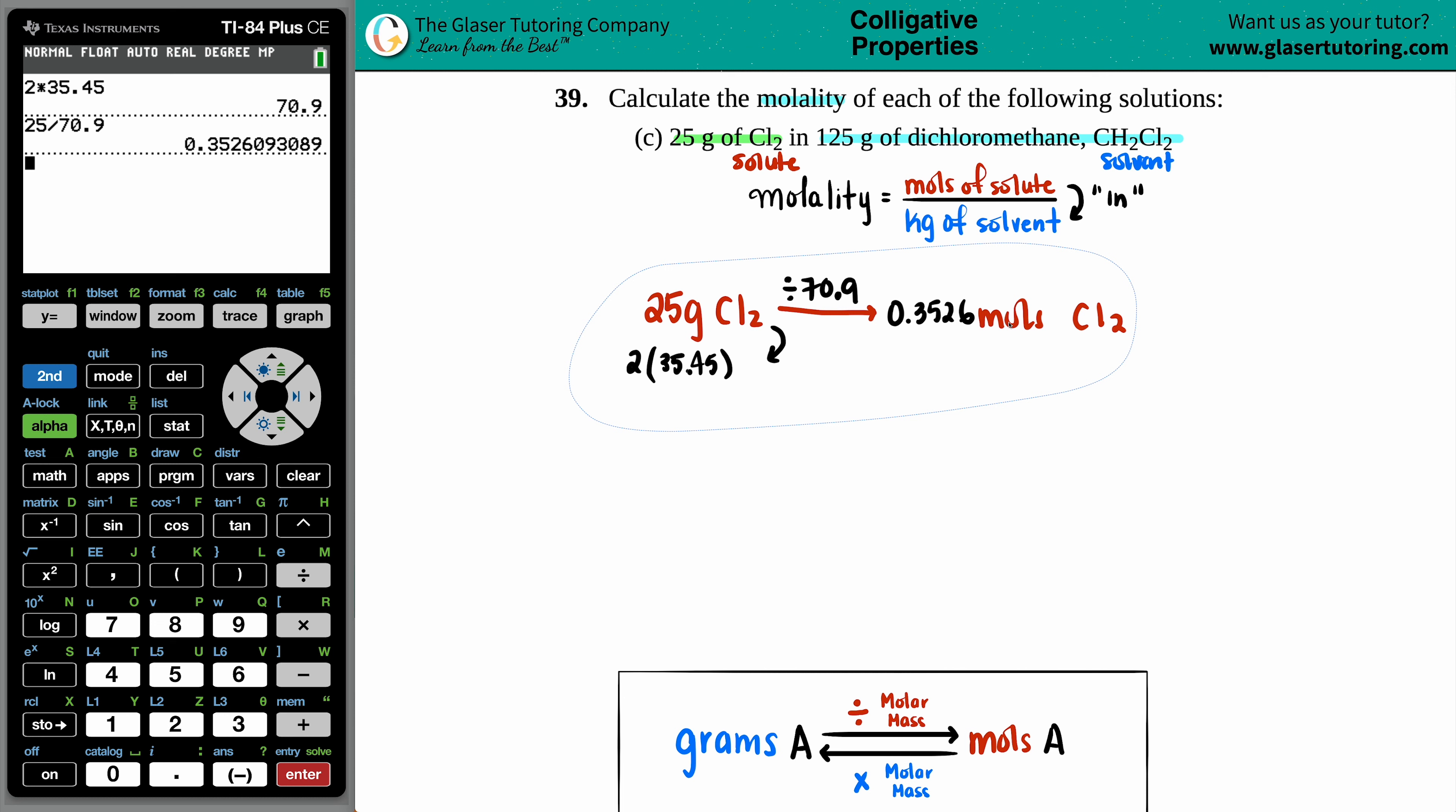Moles done. Now we need to take the solvent, which is the CH2Cl2, and go to kilograms. Well, they gave us grams. 125 grams of the CH2Cl2. But that's okay, because I just want to go to kilograms.